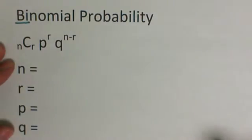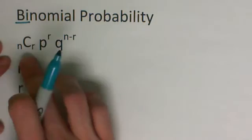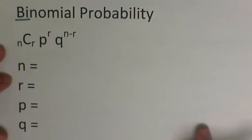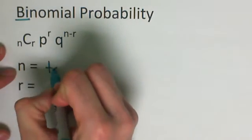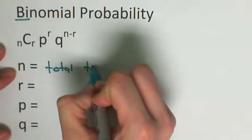This is the formula that we're going to be using. The nCr you'll recognize from our combinations and we have a few other letters in here as well. So first off, n is the total number of trials that we are going to be using, so like how many times you're rolling the die or flipping the coin.